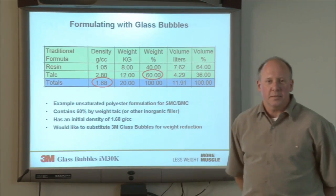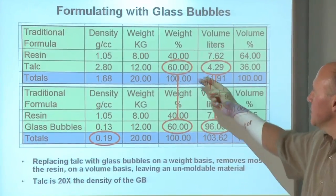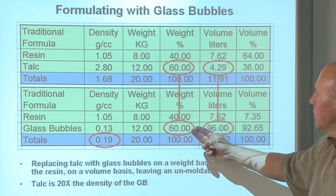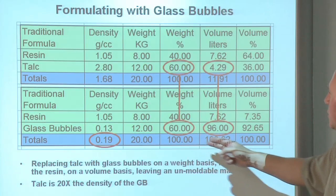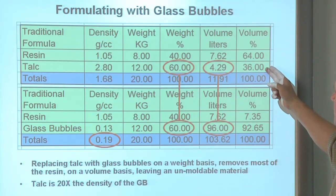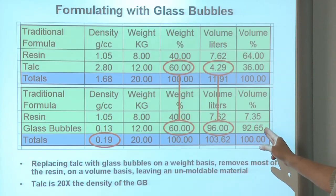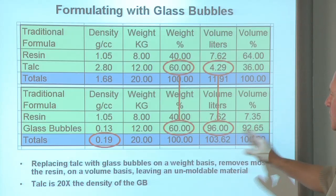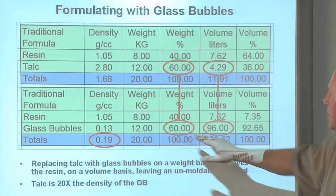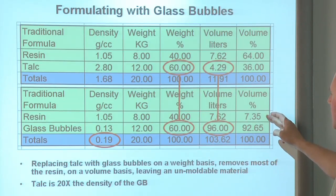If we replaced the talc with the same weight percent of glass bubbles — 60% by weight — we've changed the volume percent of talc from 36% to 92.65% filler with glass bubbles. So the same weight percent results in almost all of the composite turning into glass bubbles, with very little resin left over as the glue to hold the composite together.